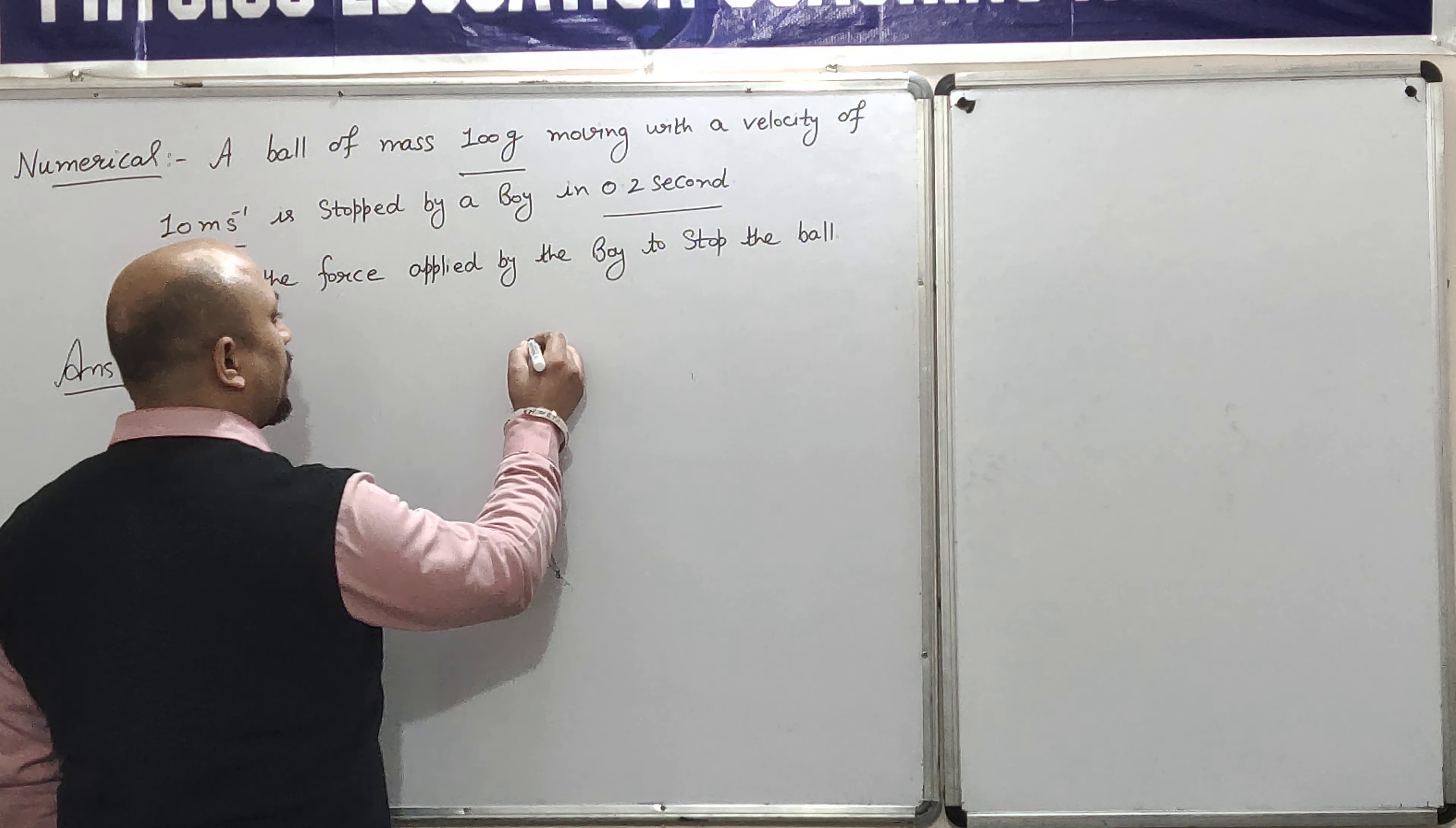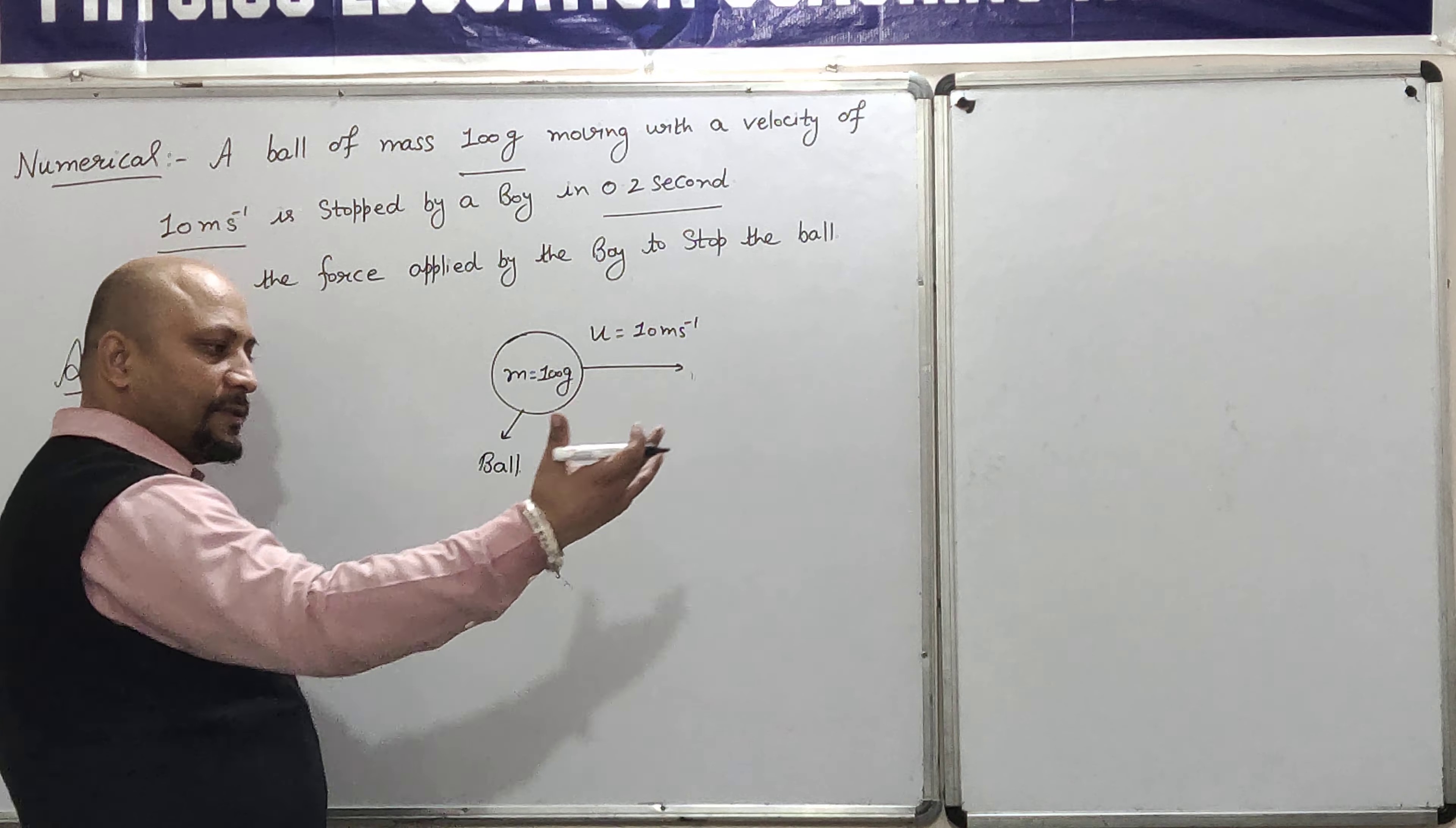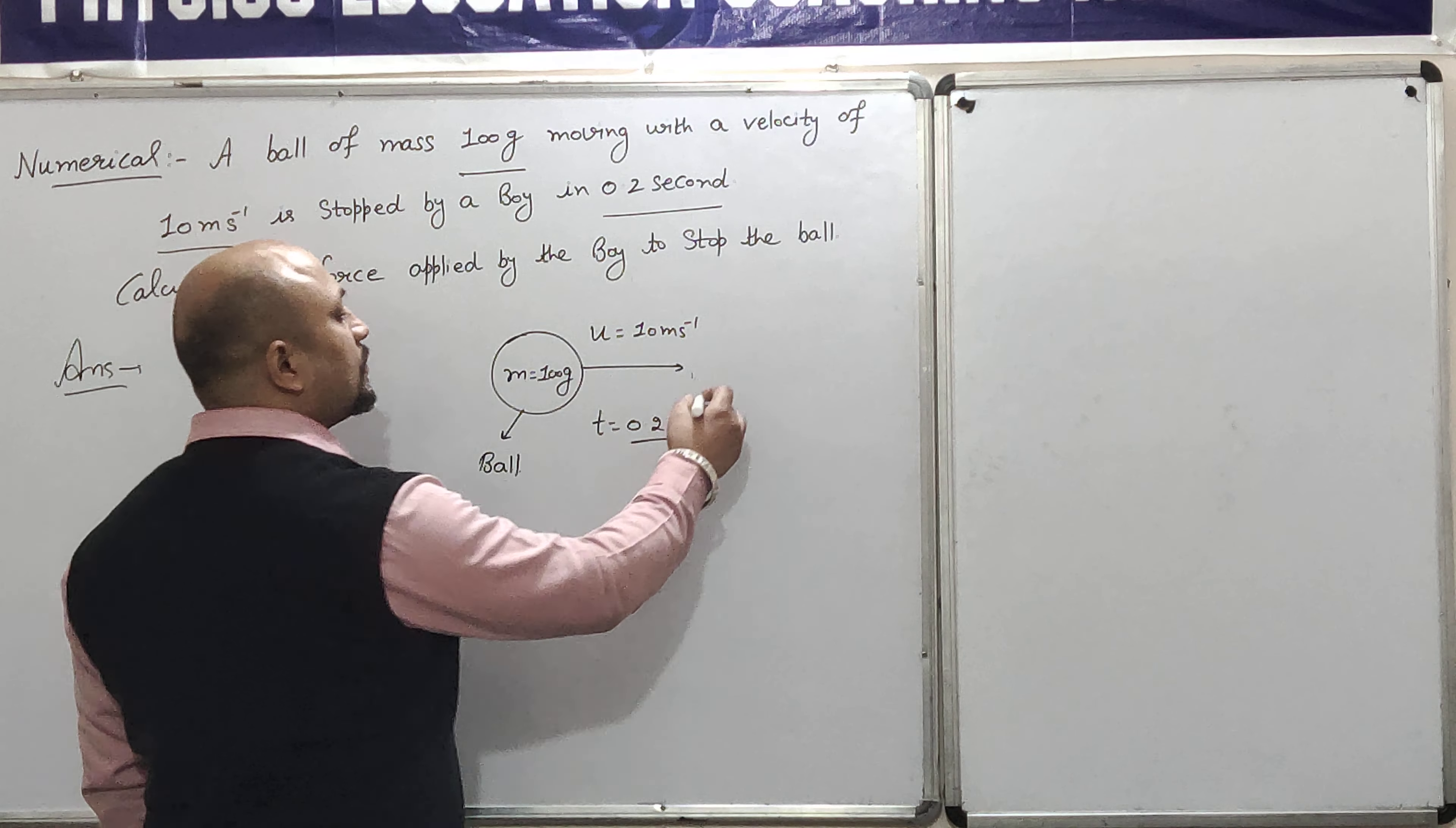This is the ball having the mass is say 100 grams and it is moving with a initial velocity of that is 10 meter per second. Initial velocity को हम U से denote करते हैं. Now this ball which is the ball coming forward, this ball को एक बच्चा हाथ से रोक लेता है. And 0.2 second के अंदर that time t is equal to 0.2 second में वह इस ball को रोक लेता है. Now, if you want to drop it, it will be zero. That means that boy has put a force to stop it. And that force has the ball's motion to oppose it. So, that force is out of you.